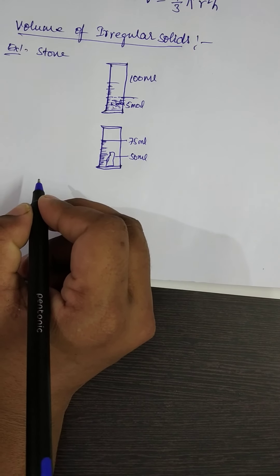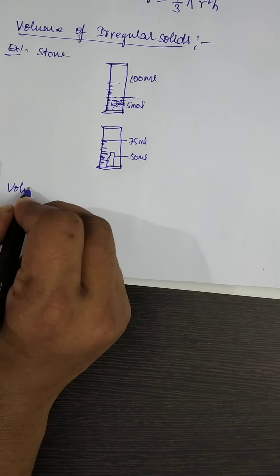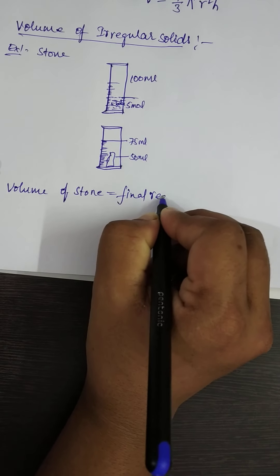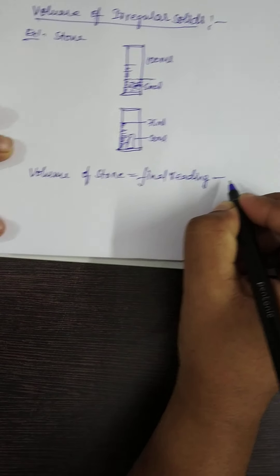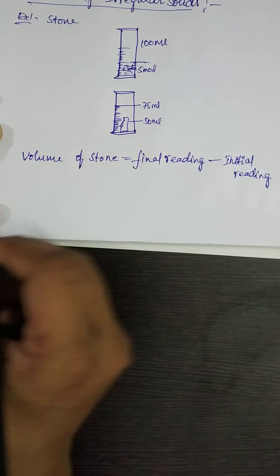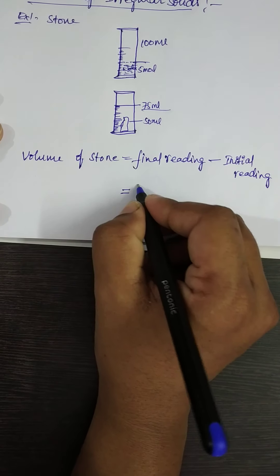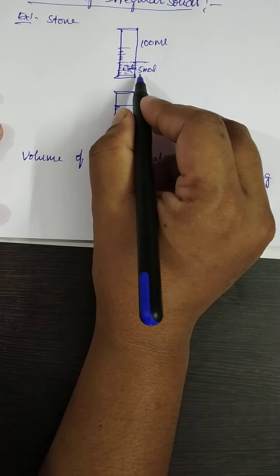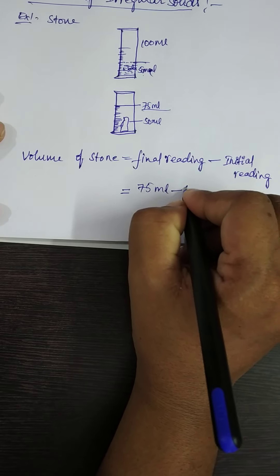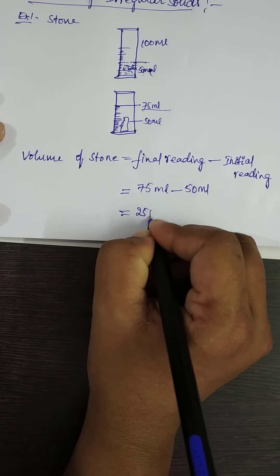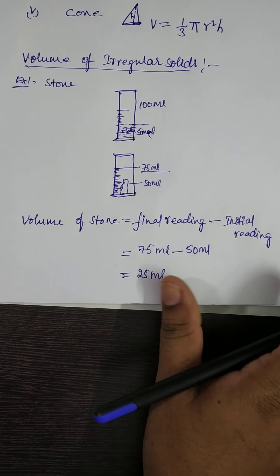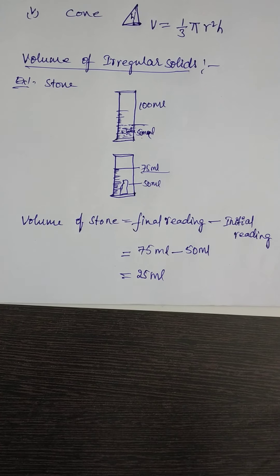How to calculate the volume of the stone: Volume of stone = Final reading − Initial reading = 75 ml − 50 ml = 25 ml. So the volume of the stone is 25 ml. This is how we calculate the volume of irregular bodies. I hope you liked the video — please like, share, and subscribe. Thank you for watching.